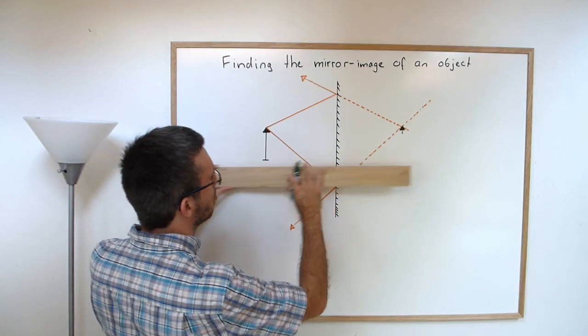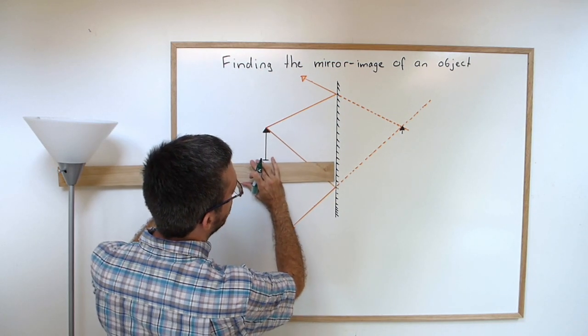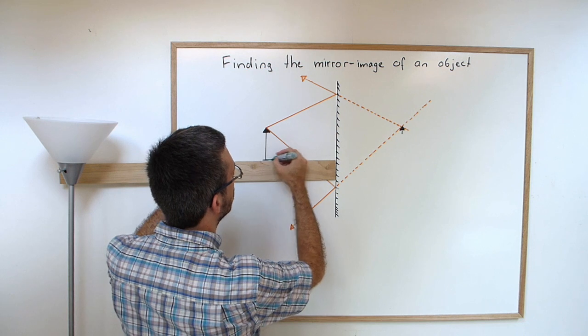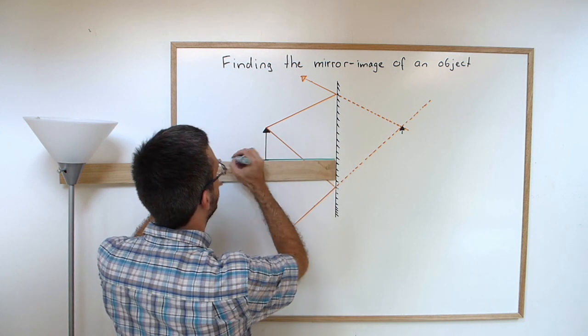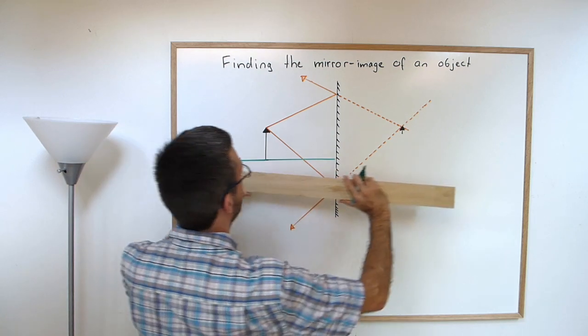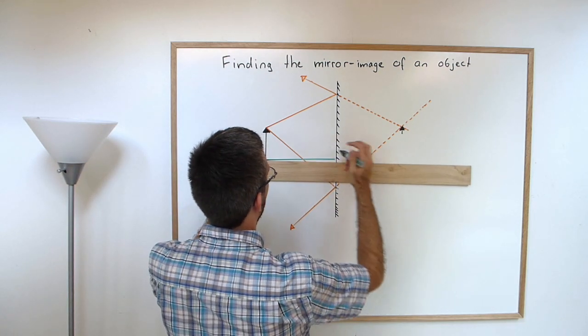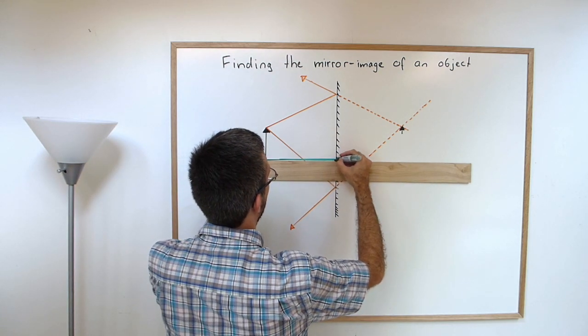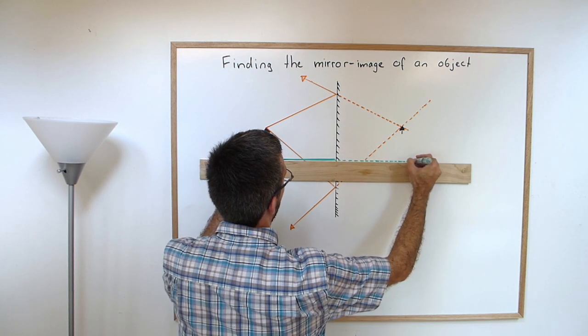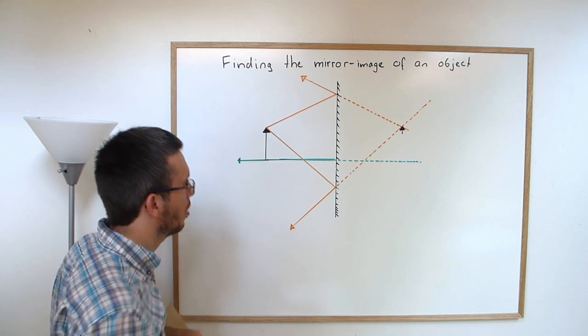One of the easiest rays that you could draw is the one that's perpendicular. I know that one will just reflect right off, so if I backtrack, it will appear that this light came somewhere from there.